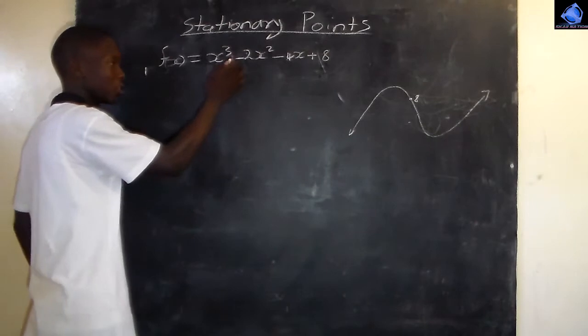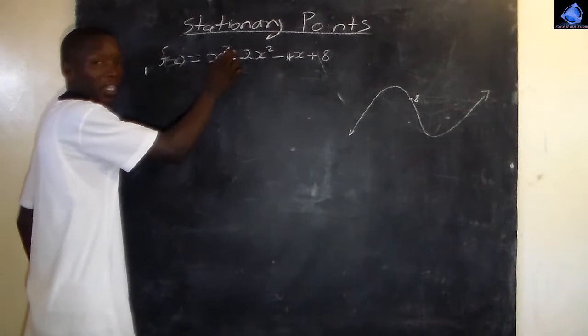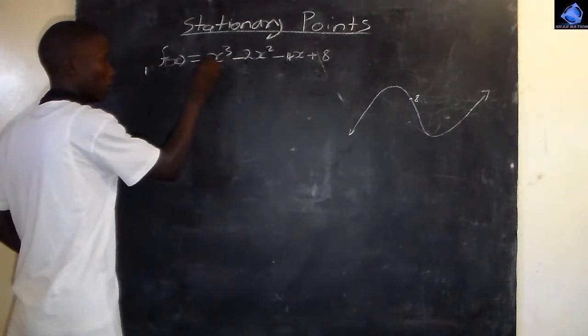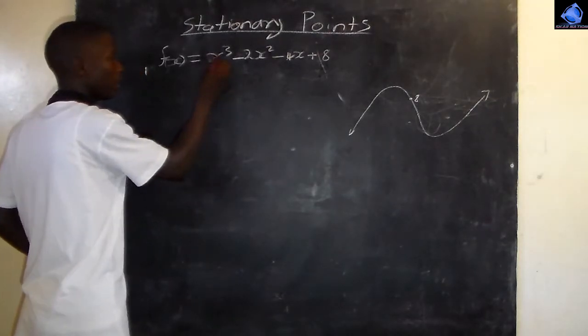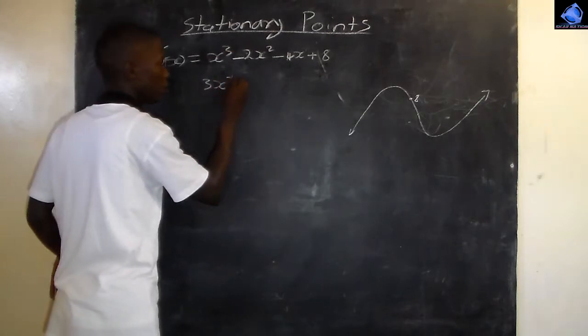We take the exponent times the coefficient and bring the base to the exponent minus one. This gives us 3x squared. Then we have negative 2 times 2, so negative 4x.